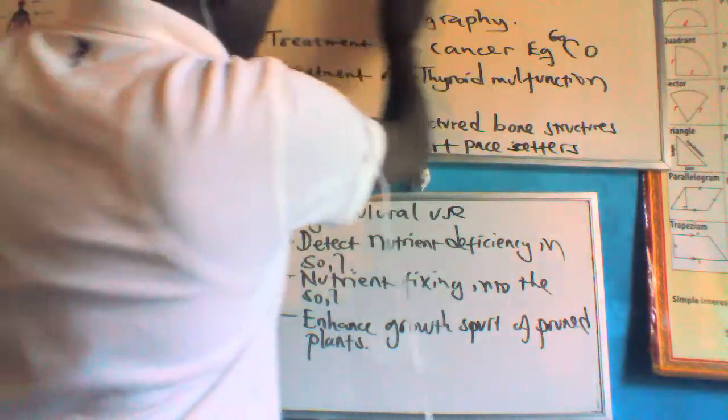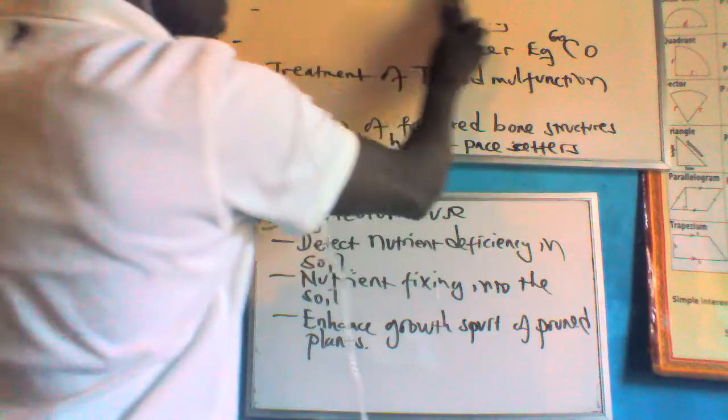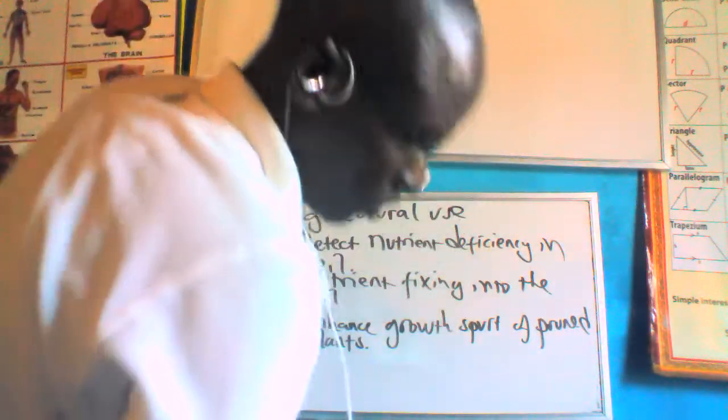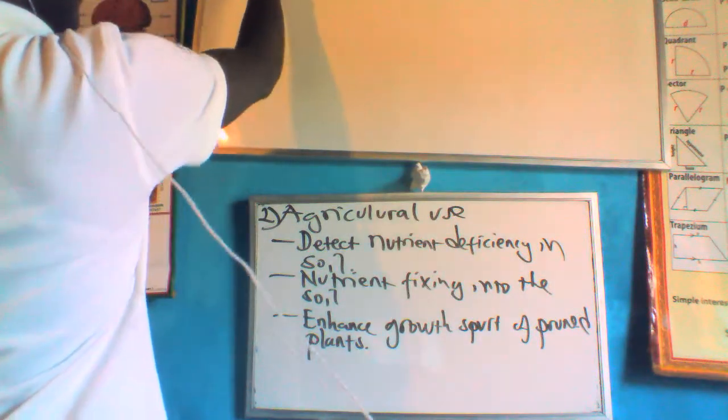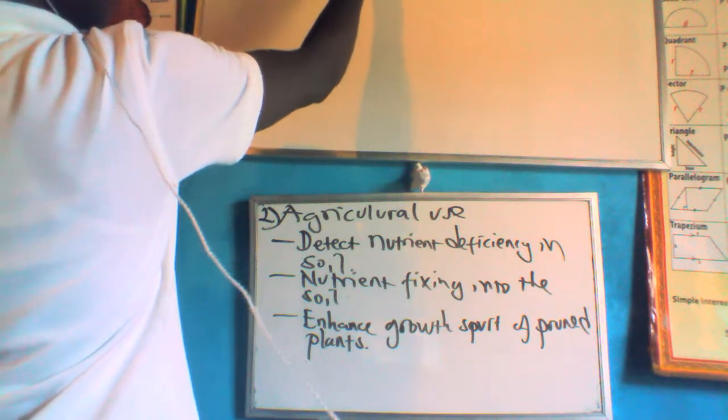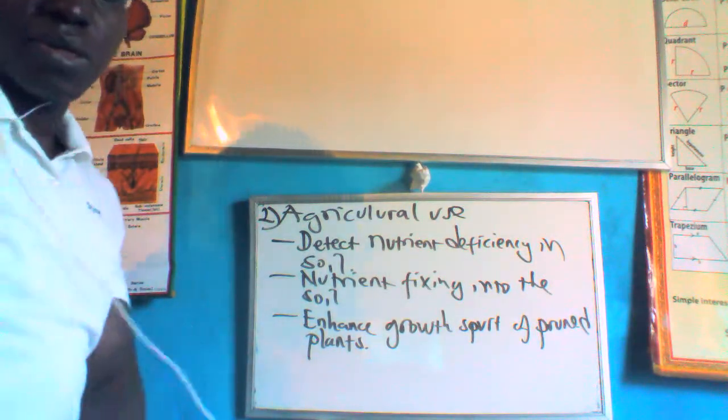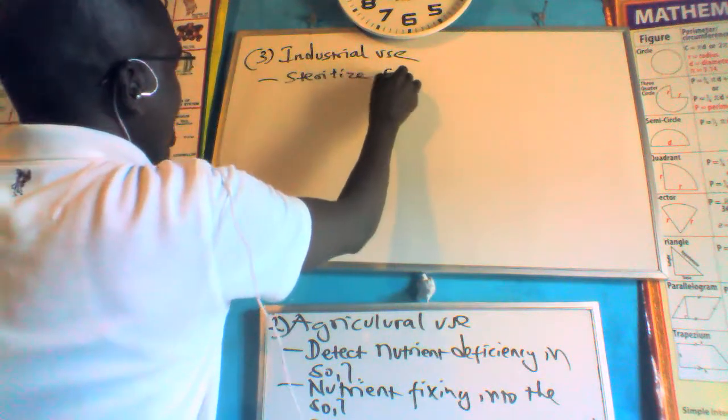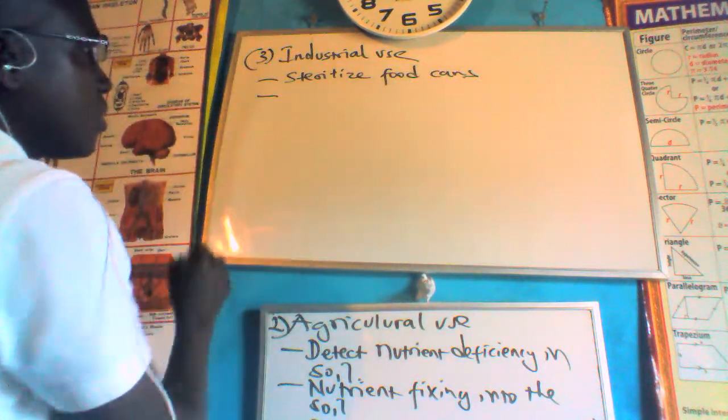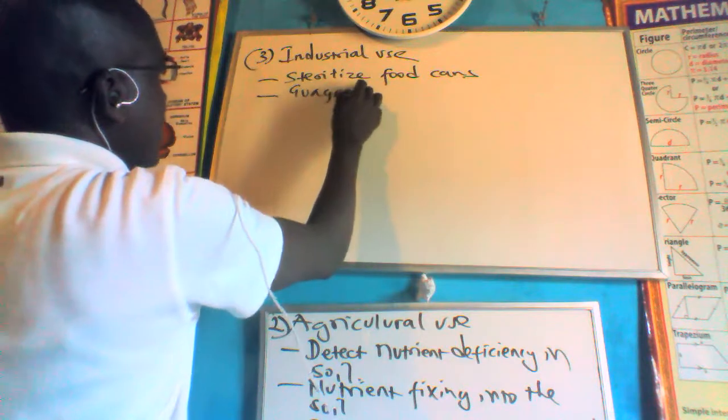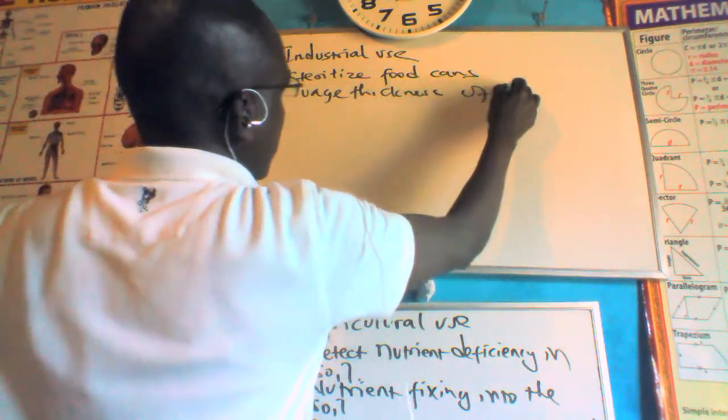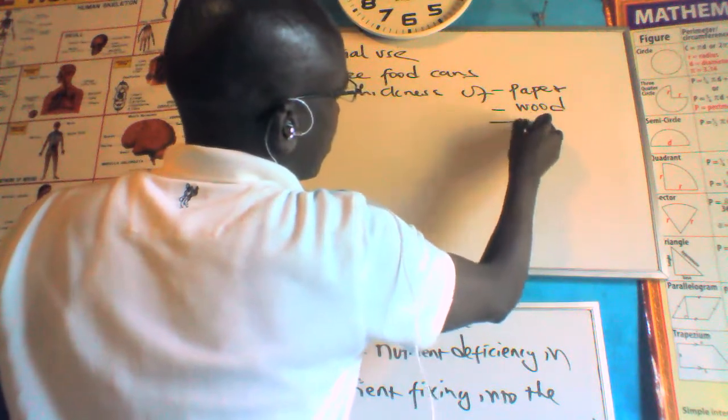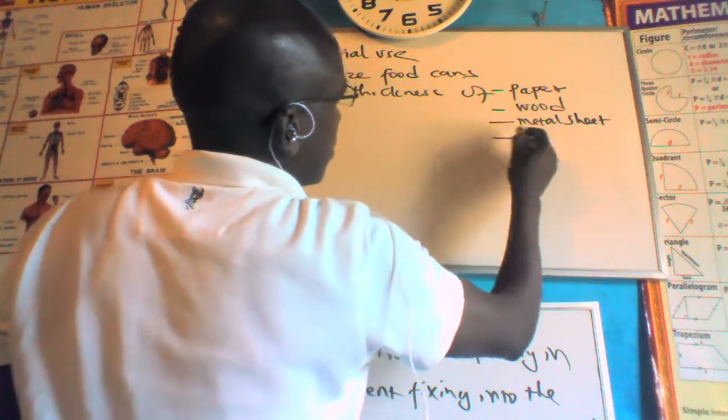Number three section, apart from the medicinal use or the use in medical processes and the use in agricultural processes, we can use it in industrial processes. So number three is the industrial use. For the industrial use, one we can use it to sterilize food cans, and we can use it to gauge the thickness of paper, wood, metal sheets, and glass.